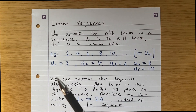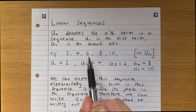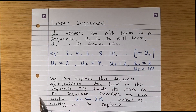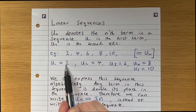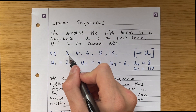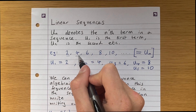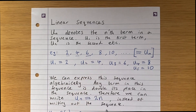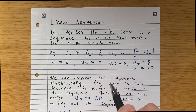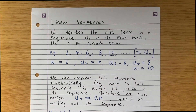So for example, if we have a sequence: 2, 4, 6, 8, 10 — we say that u1 is equal to 2, u2 is equal to 4, u3 is equal to 6, u4 is 8, and u5 is 10. That's just a notation thing.